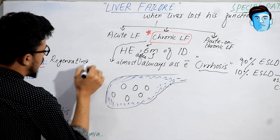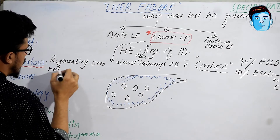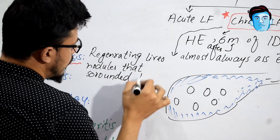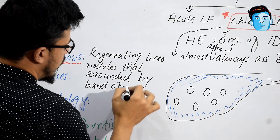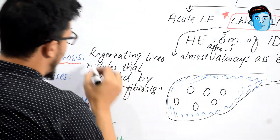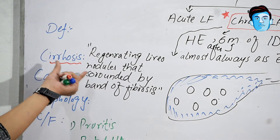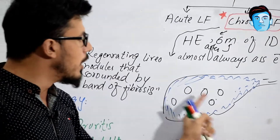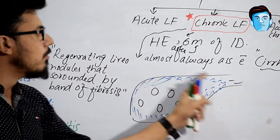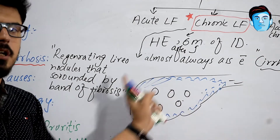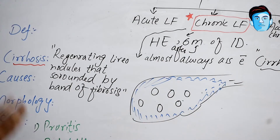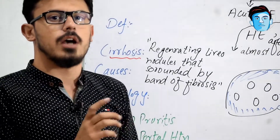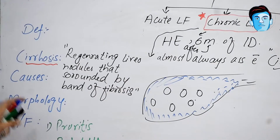Cirrhosis is defined as regenerating liver nodules surrounded by bands of fibrosis. In the cirrhotic picture of the liver, there will be nodules surrounded by repeated healing, scarring, and fibrosis occurring one after another. As it is more associated with chronic infection, there will be repeated episodes of scarring and fibrosis.